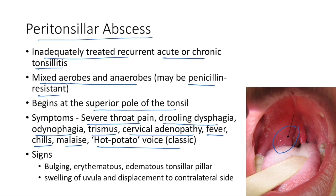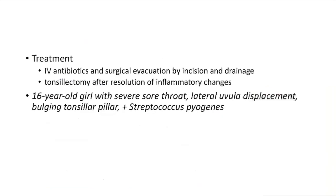Clinical findings of peritonsillar abscess: bulging erythematous tonsillar pillar, swelling of the uvula, and displacement of the uvula to the contralateral side. Treatment: IV antibiotics and surgical evacuation by incision and drainage. Tonsillectomy can be done after resolution of inflammatory changes.